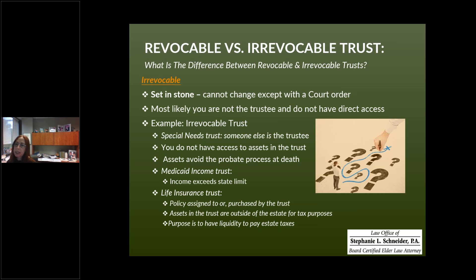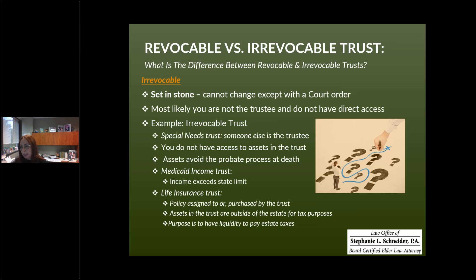The first example of an irrevocable trust is called a special needs trust. This is used where somebody had an accident or went into the hospital for a procedure and a mistake was made during the surgery or medical procedure, and that person is now injured. Because they're injured — as the result of a medical malpractice or a car accident — a lawsuit is filed. The lawsuit is successful, either through trial or mediation, and there's a settlement. But that person now has long-term disabilities and chronic illnesses.